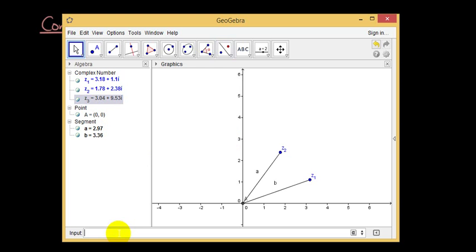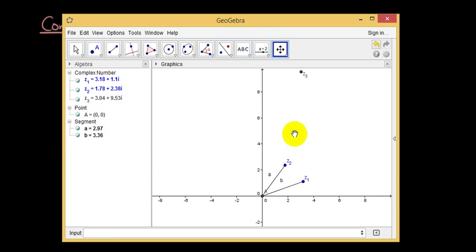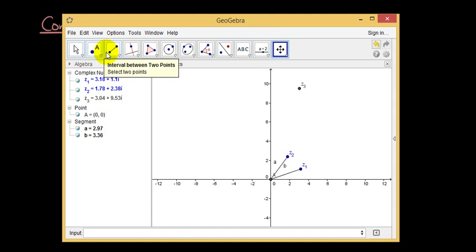if I find where z3 is first. So if I draw a line from z3 back to 0, I got the magnitude as 10, which is about the same as 2.97 times 3.36.